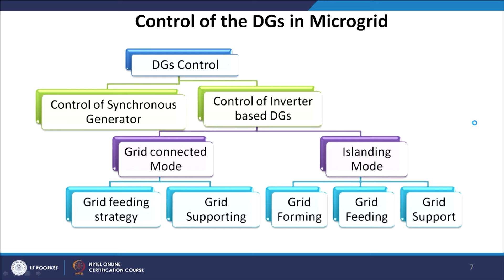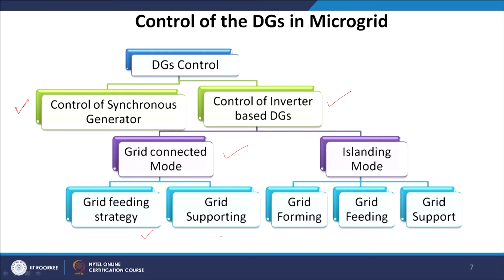Distributed generations within a microgrid and their control are classified as follows: first, control of synchronous generators; and then the major variety — control of inverter-based distributed generators. Synchronous generator-based control is classical, whereas inverter-based DG control is slightly different and will be the major focus of today's lecture. For inverter-based DGs, there are two types depending on the operation mode: grid-connected mode — which includes grid feed strategy and grid supporting strategy — and islanded mode.